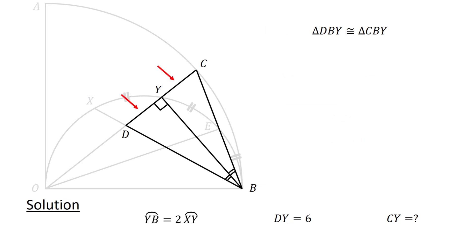Since DY and CY are corresponding sides in congruent triangles, we have CY equals DY. Since DY equals 6 units, CY also equals 6 units, which is the solution to our problem.